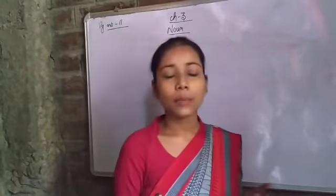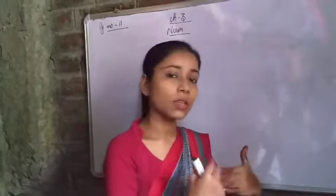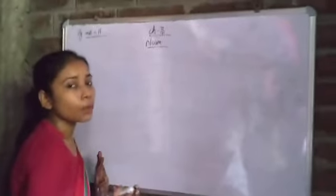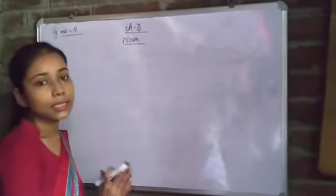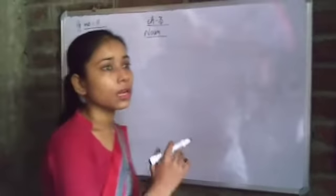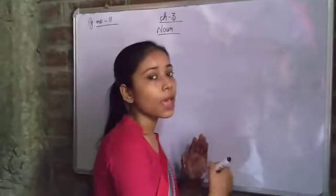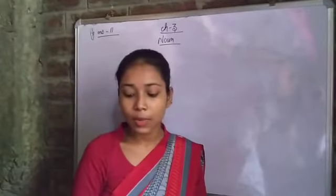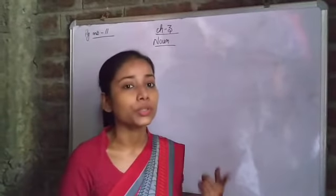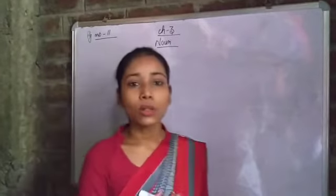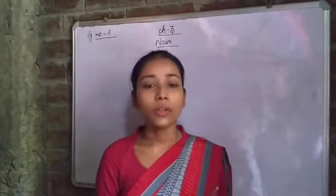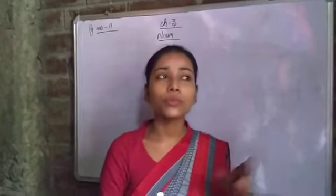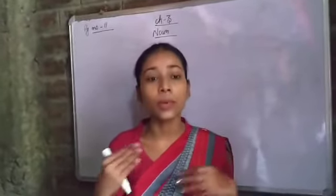Some nouns like 'mother' and 'sister' are common nouns, but they also show gender as feminine. Similarly, proper nouns like 'Sita' tell us the person is female, and 'Ravi' tells us the person is male — so from names we can also identify gender. Nouns that name female people or animals belong to the feminine gender.